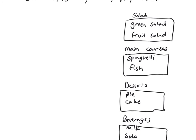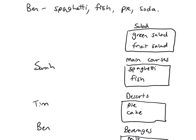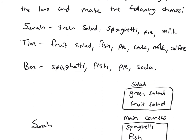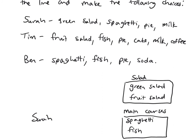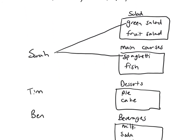Over on the left, I'll write each student: Sarah, Tim, and Ben. Let's connect up their choices. Sarah chose a green salad, spaghetti, pie, and milk.